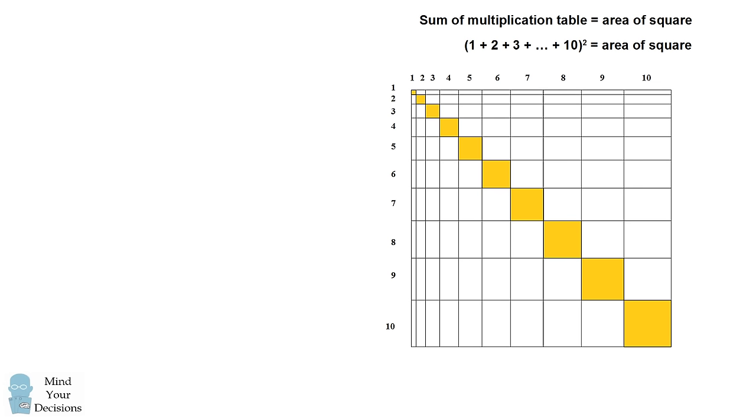So once again, we have the problem, how do we sum up numbers from 1 to n? I'll take a simpler problem. Let's look at the numbers 1 to 4. If we have a unit square, which has side length 1, we want to add up 1, we want to add up 2 of them, then 3 of them, and 4 of them. So what's the area of the shape?